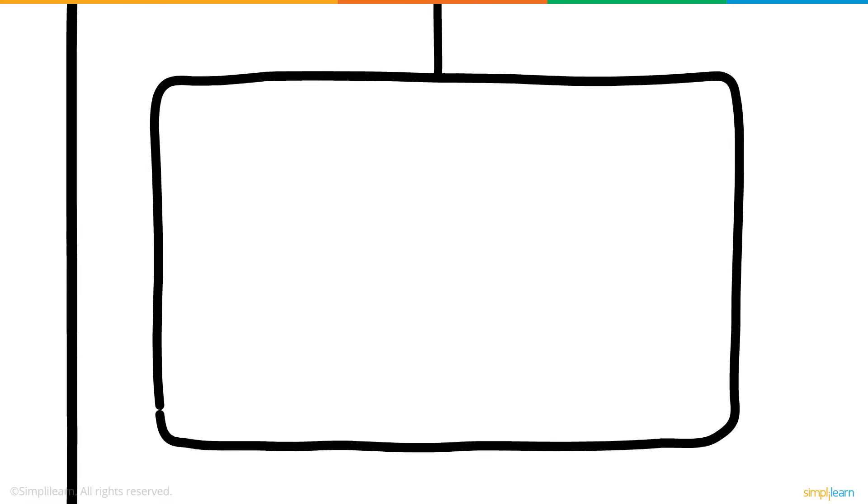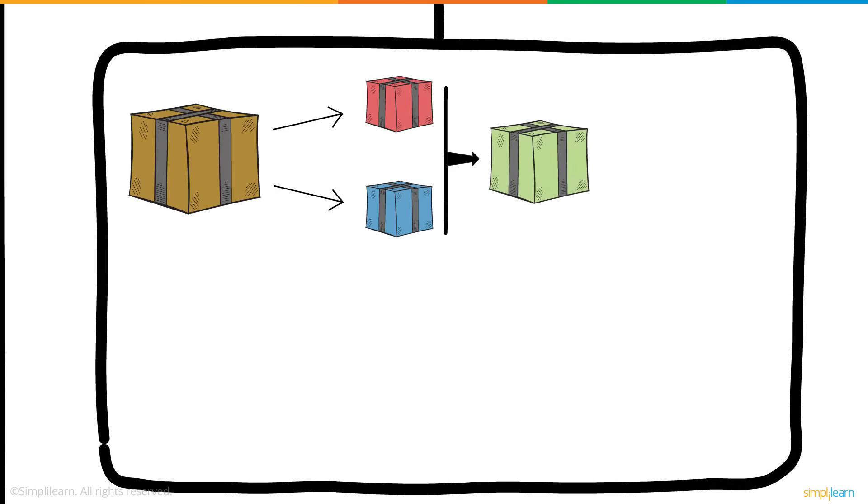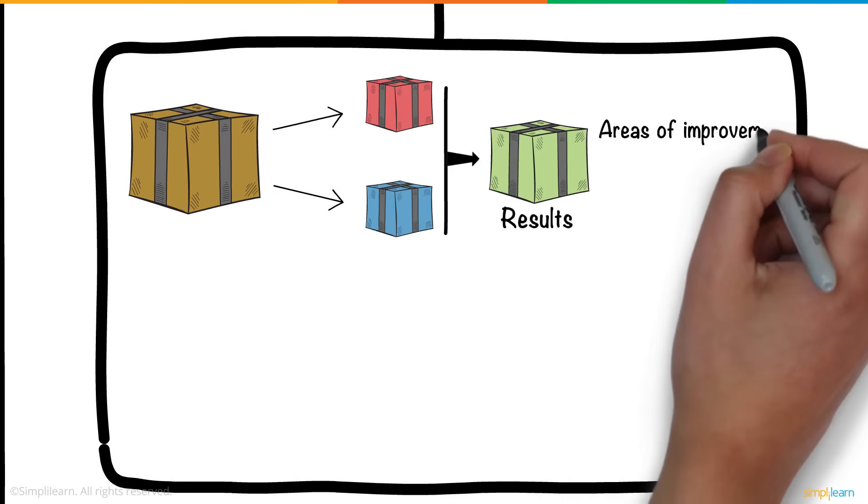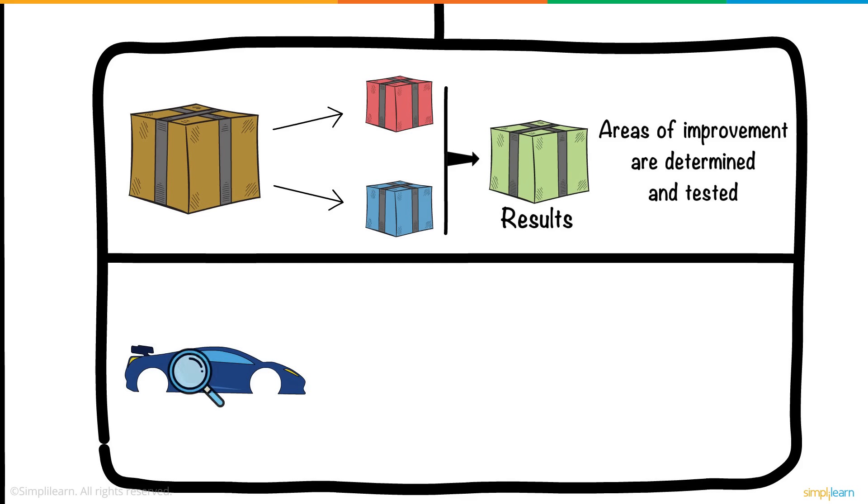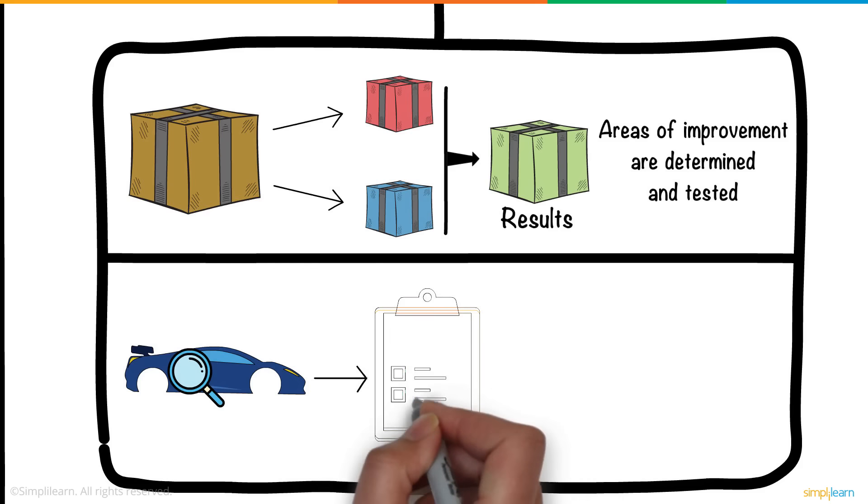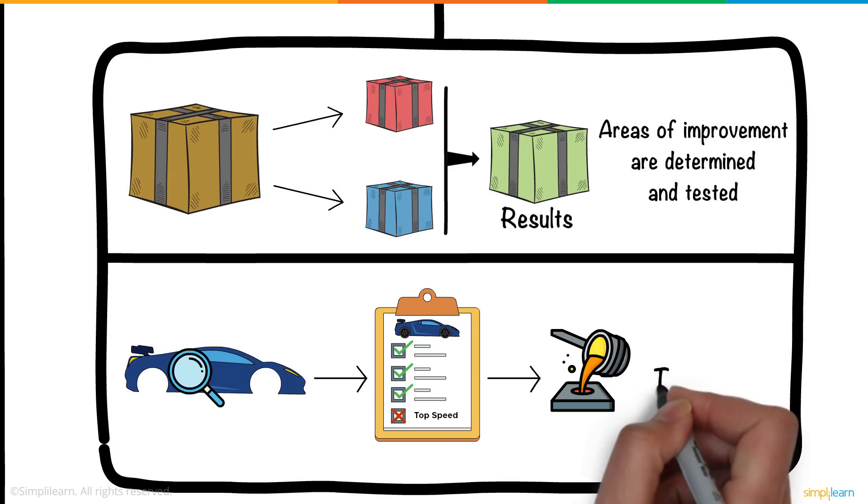In the Analyze phase, you analyze the product to determine whether there are better ways to achieve the desired results, areas of improvement are determined and tested. Based on the analysis of the prototype created in this phase, you find that the product satisfies just about all of the customer requirements, except the Top Speed. So, research begins on an aluminum alloy that could possibly meet the speed requirements of the customer.